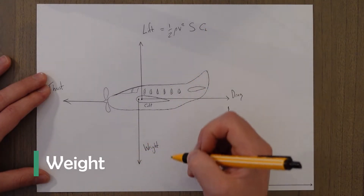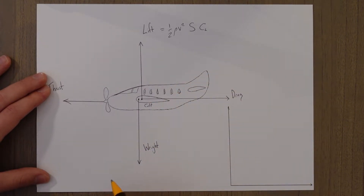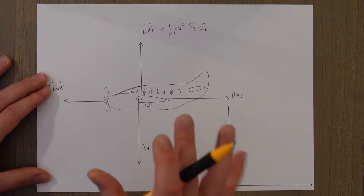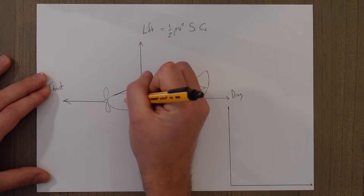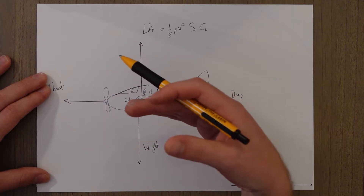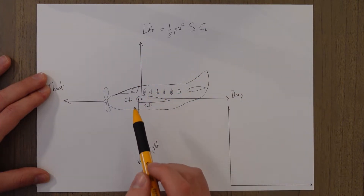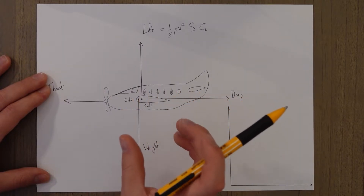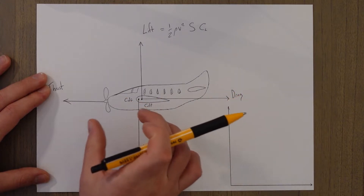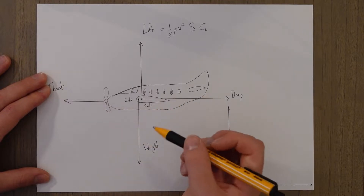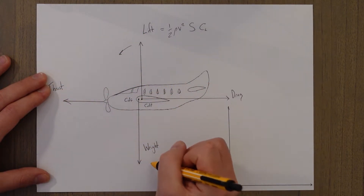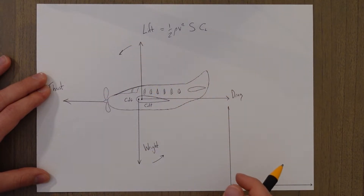Weight is a force that pulls an object towards the surface of the Earth — in our case, our plane towards the surface of the Earth. It is the mass of an object multiplied by the acceleration due to gravity, which is 9.81 metres per second squared, or 10 for rough calculations. Weight acts through the centre of gravity, the C of G, and our plane needs to have the same amount of lift as it does weight in order to fly straight and level. The lift acting through the centre of pressure and the weight acting through the centre of gravity are rarely in the same position — the centre of gravity is normally further forward — and this causes a slight nose-down pitching moment.